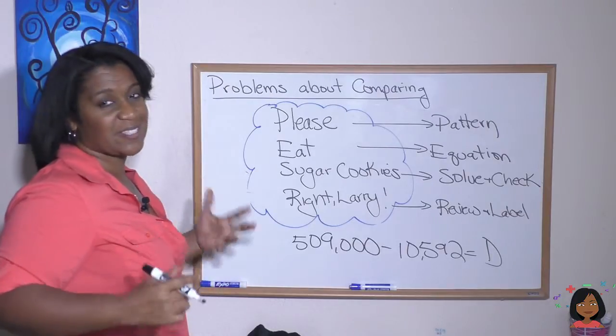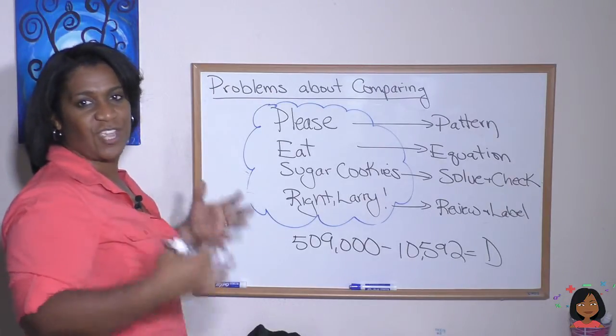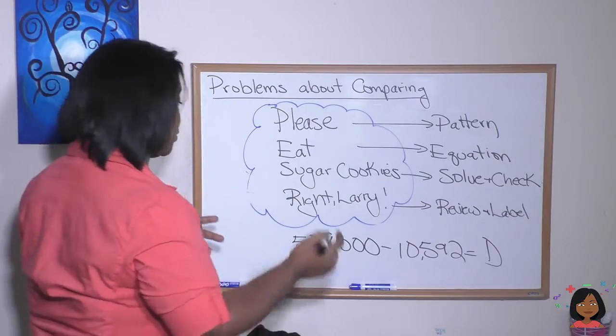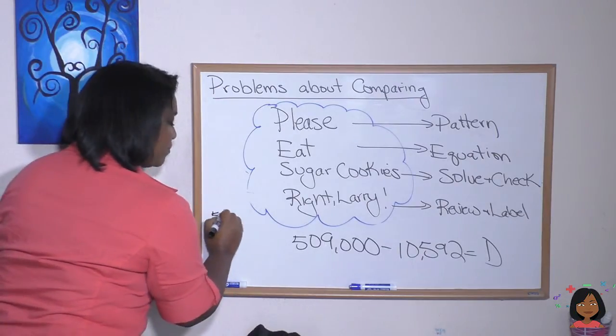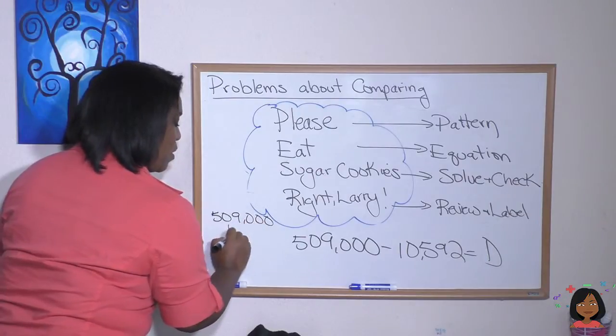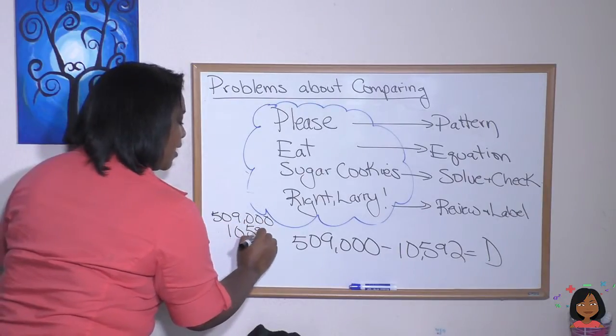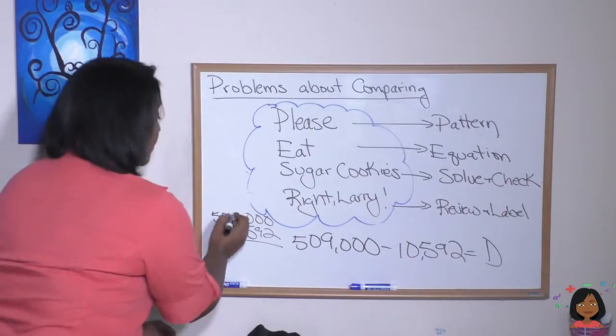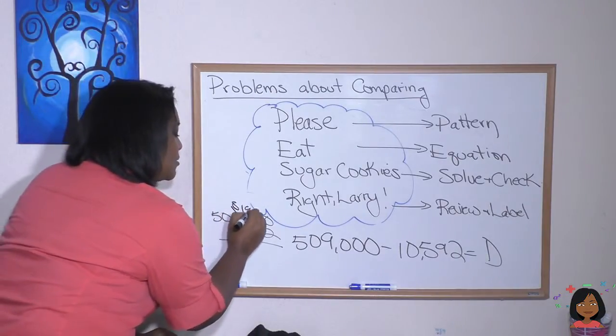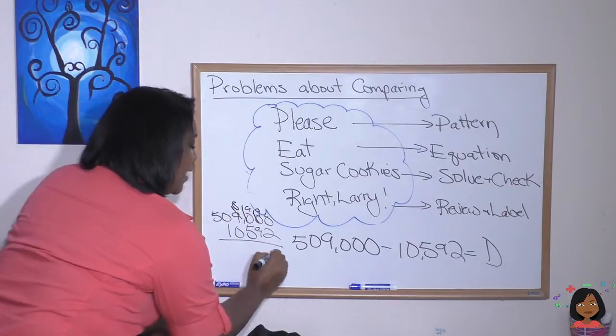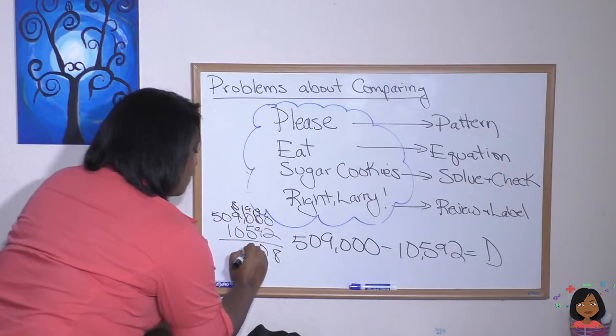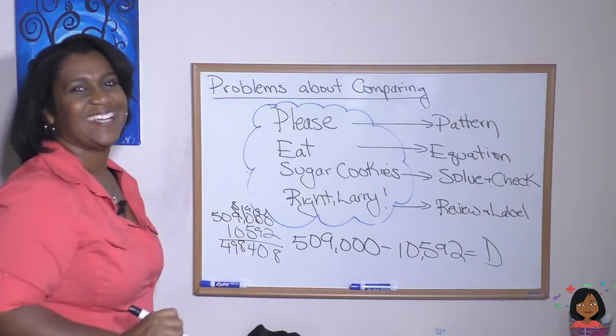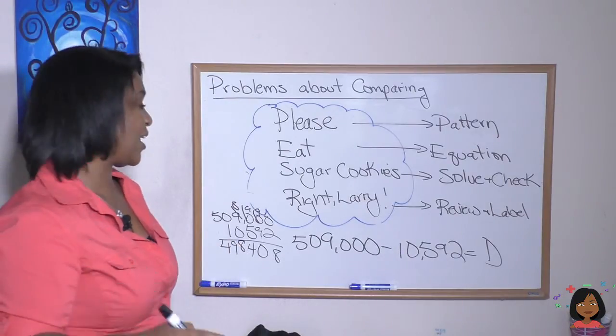Now sugar cookie stands for solve and check. Let's go ahead and solve this. Straight subtraction. Let's do it over to the side. 509,000, 10,592. We got a lot of borrowing to do here. Here we go. Let's do it. 498,408. Woo!